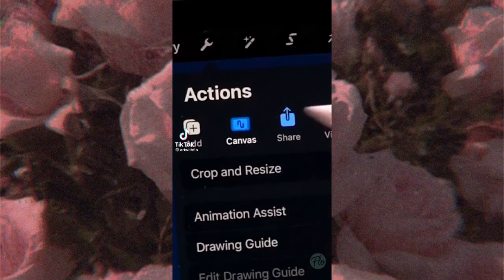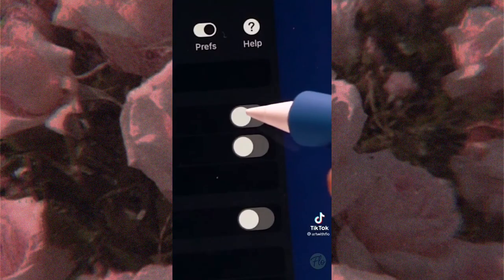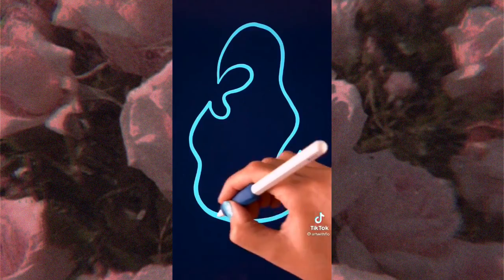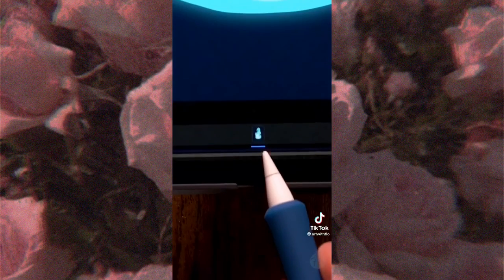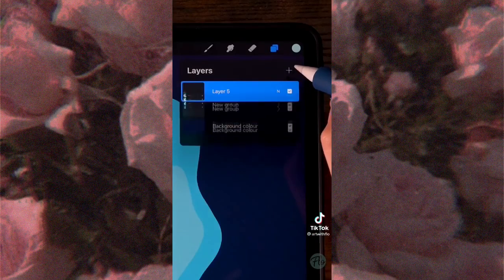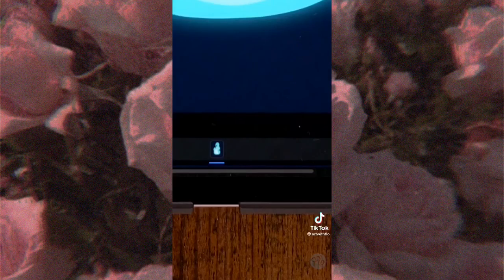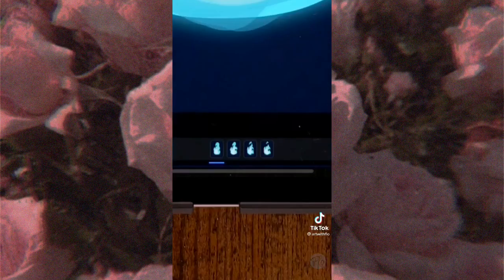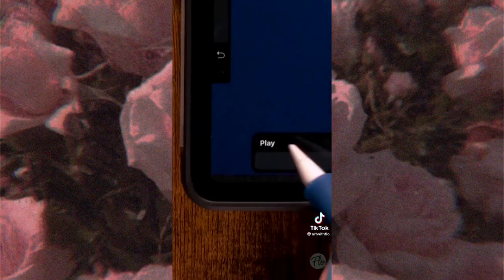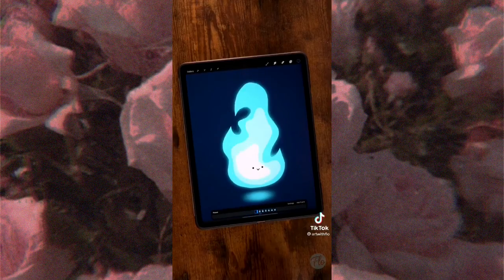To make an animation in Procreate, go to the wrench, then to canvas, and turn on Animation Assist. Then start drawing on your layer. Every layer or layer group becomes a frame in your animation. Continue making new frames by making new layers or new layer groups. Once you have made enough frames, click play here at the bottom and watch your cheerful animation.